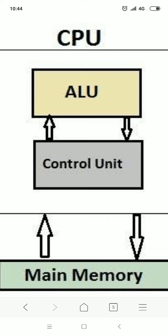तो CPU के ये तीन main parts हैं — ALU, CU, and Memory. IPO में से जो P part है processing, उस processing के लिए जो device use होती है CPU, उस CPU में तीन main parts हैं: ALU, CU, और Memory. इन तीनों के functions आपको clear हो गए.